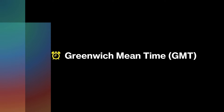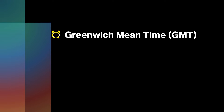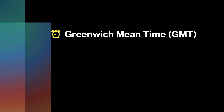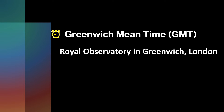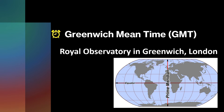Greenwich Mean Time is a time standard that is used as the basis for civil time throughout the world. It was established at the Royal Observatory in Greenwich, London, and it is based on the mean solar time at the Prime Meridian, which passes through Greenwich.